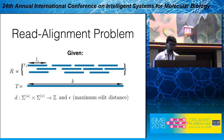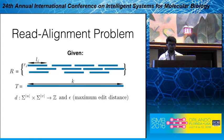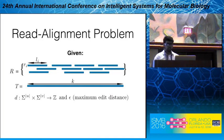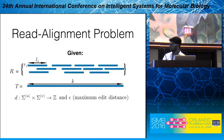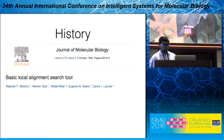Before moving further, let me briefly define the problem of read alignment. Given a set of reads shown by capital R, a reference sequence shown by capital T, a distance function d which gives the distance between two sequences u and v, and epsilon which denotes the maximum allowable edit distance, the goal is to find an alignment for every read in the reference sequence. It's a pretty intuitive and well-known problem.